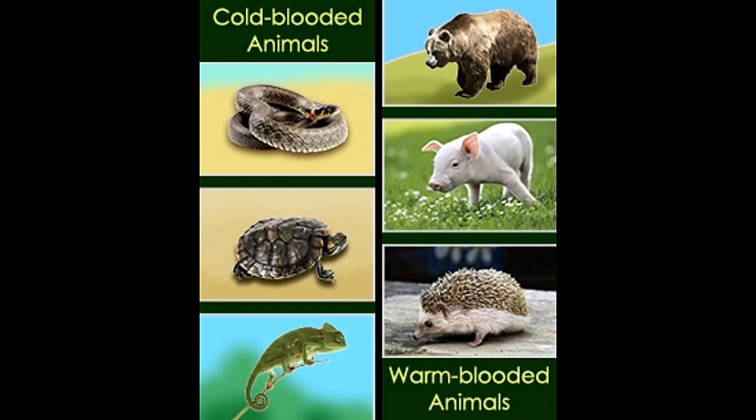The animals who possess the ability to maintain their internal body temperature irrespective of the temperature of the surroundings are called warm-blooded animals or endotherms, whereas the animals whose body temperature fluctuates along with changes in the environmental temperature are known as cold-blooded animals or ectotherms.